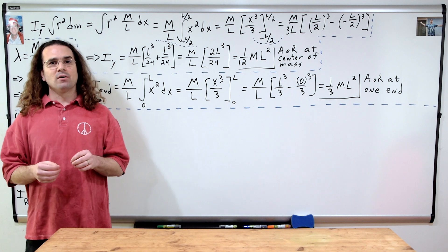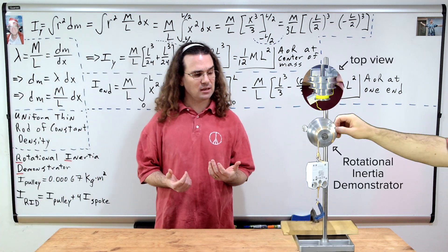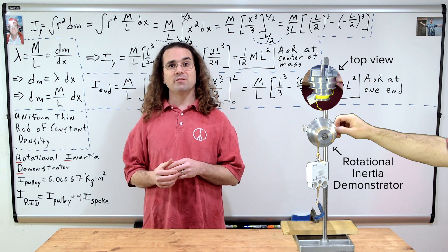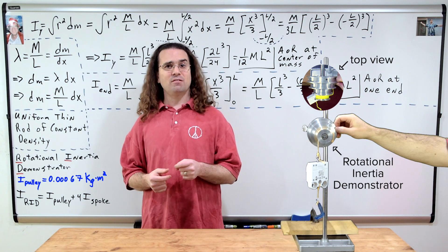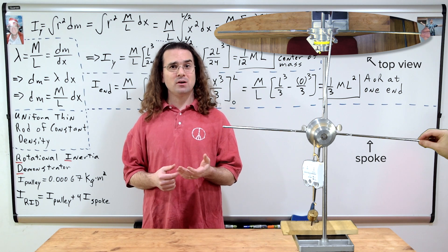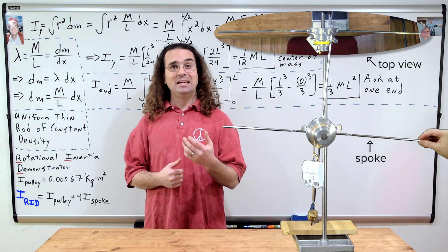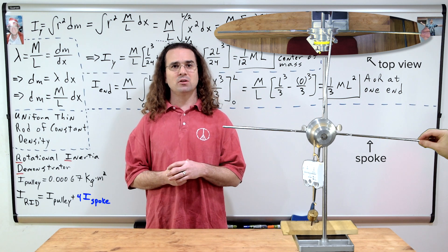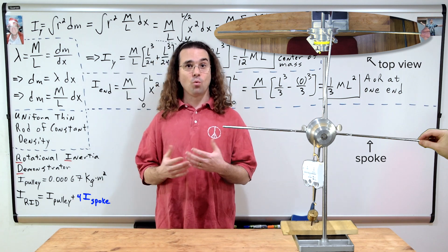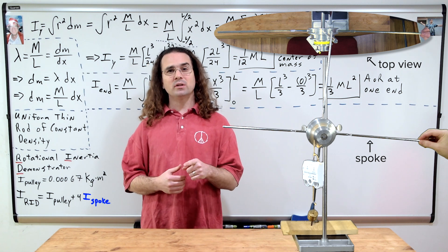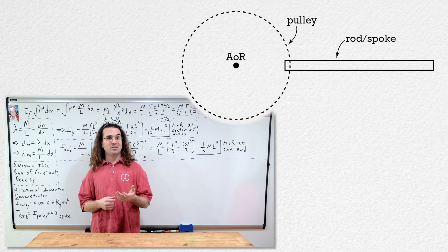Thank you. Now I said we are going to be able to test our solution. To do so, we can use the rotational inertia demonstrator from Arbor Scientific. Previously, we measured the rotational inertia of the central pulley system to be 0.00067 kg·m². We can add four spokes to the demonstrator, and each spoke is a long, thin, uniform rod. The total rotational inertia equals the rotational inertia of the pulley plus four times the rotational inertia of one spoke. Notice the axis of rotation is no longer on the rod itself — it is located to the left of the rod a certain distance.